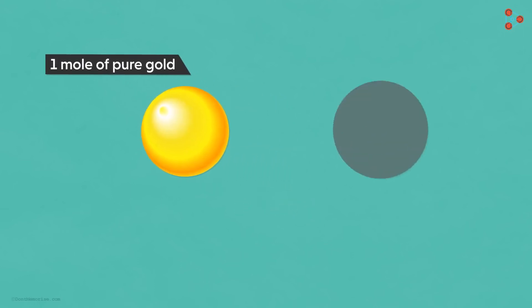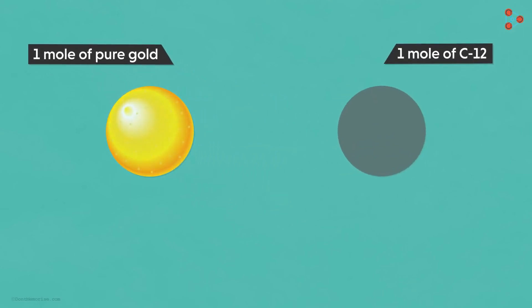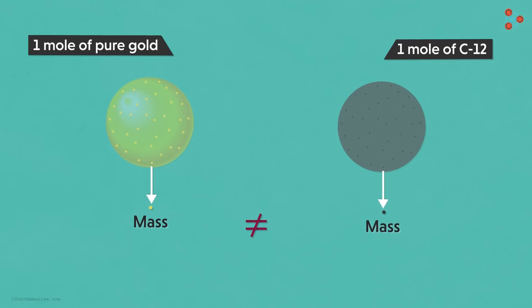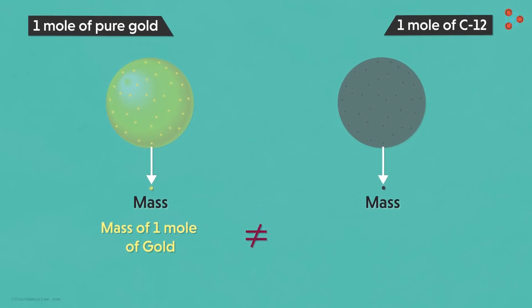Note that in both cases, the number of atoms is the same, but the mass of an atom of gold is different from the mass of an atom of carbon-12. Hence the mass of one mole of gold will definitely be different from the mass of one mole of carbon-12.